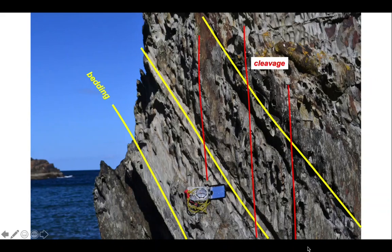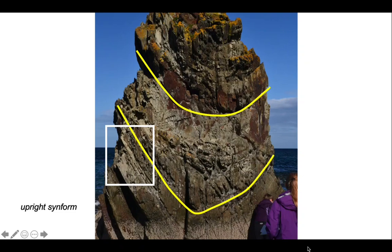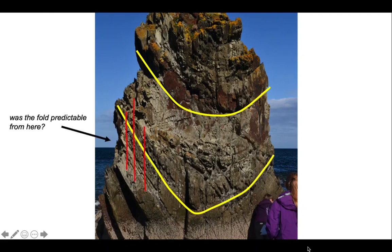Let's step back and see where this fits. Here's the outcrop they were looking at. This is the part in detail we were just looking at. And the question is, could you have predicted that the outcrop sat on this side of an upright sinform? In other words, using these relationships, was the fold predictable?